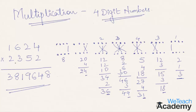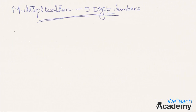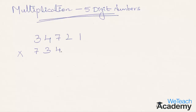The final answer for 1624 multiplied by 2352 is 3,819,648. Hope you understood the concept. Now using the same concept, let's solve a five-digit multiplication. Let's multiply 34721 with 73482. We are not going to draw any patterns — we will solve this mentally.